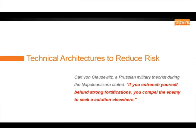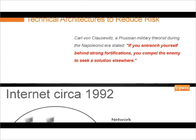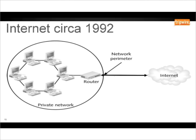I'd like to talk about some technical architectures we can use to help reduce this risk. This quote from Carl von Clausewitz is relevant: if you entrench yourself behind strong fortifications, you compel the enemy to seek a solution elsewhere. That's literally where we still are today in terms of internet architecture. It all started with getting connected to the internet initially via routers. Back in the early 90s, we connected via routers, and security wasn't really the forefront of our minds.